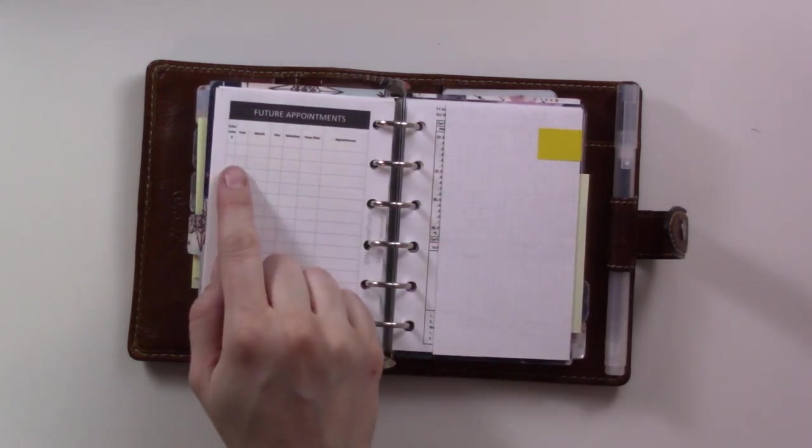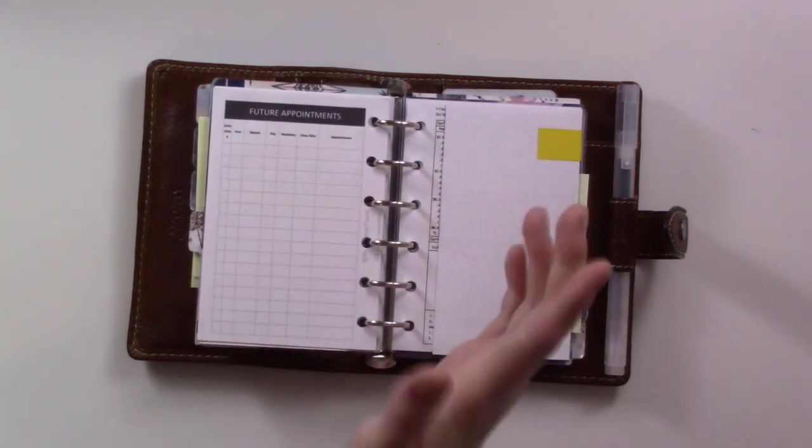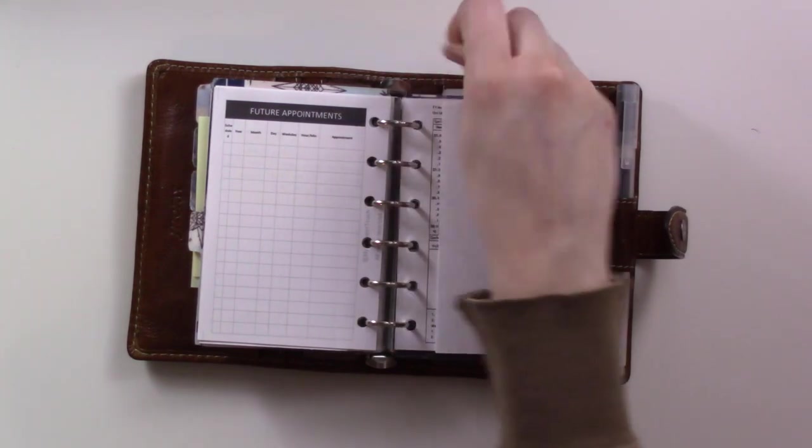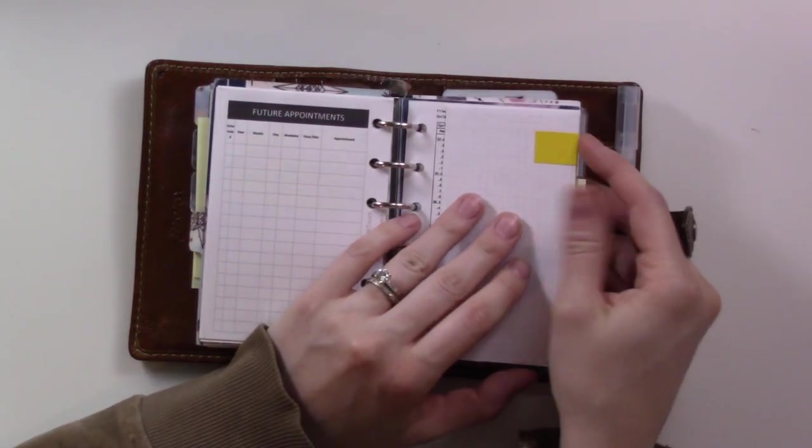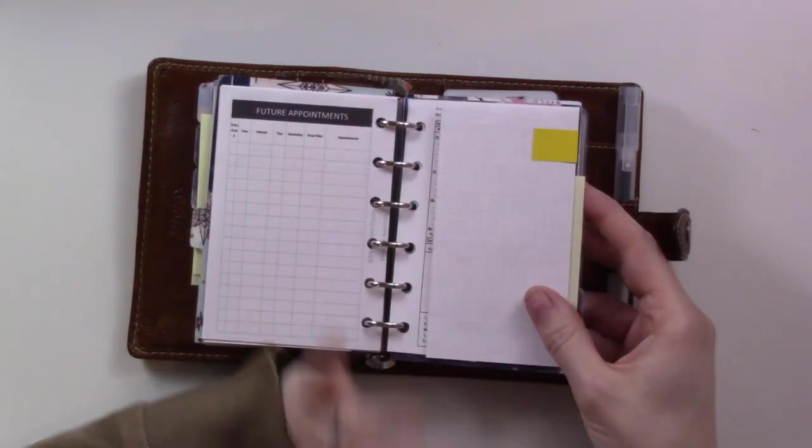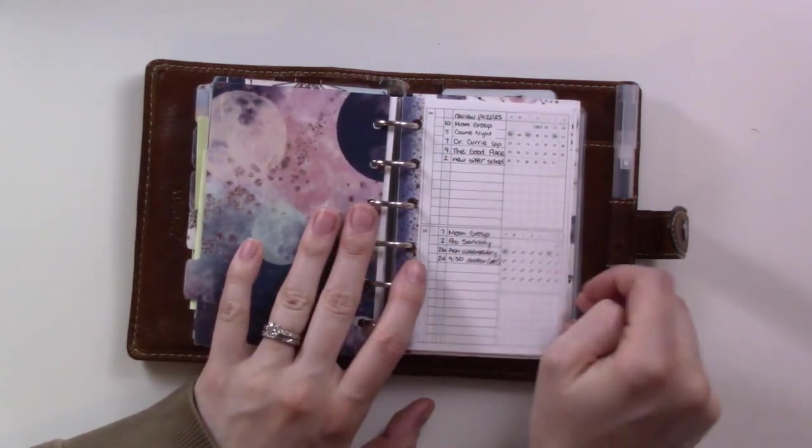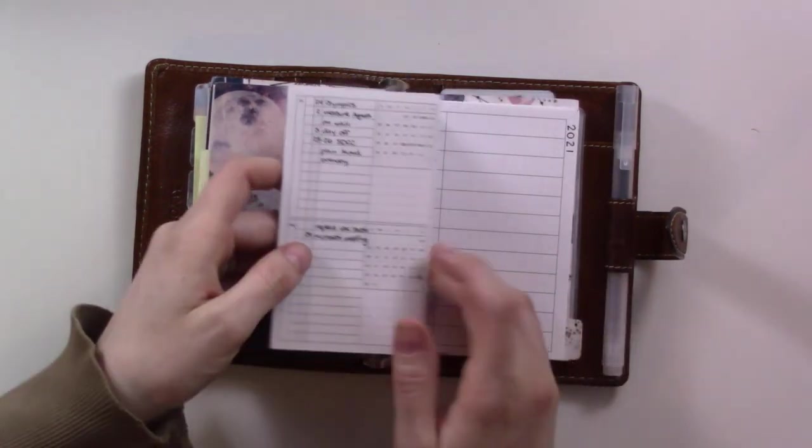Then there's also this appointment tracker which obviously that's covered as well but it just has space for year, month, day, and basically just when you're scheduling a whole bunch all at once I have them all in one place. The last few things in here, this is my NFP chart and then I have a list of questions for the doctor so I have that all a little bit private.